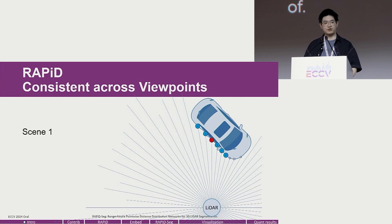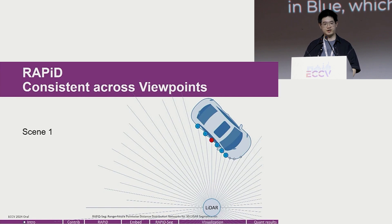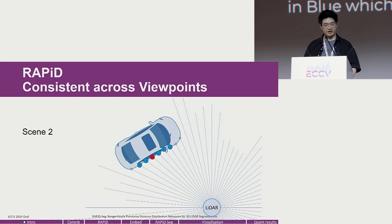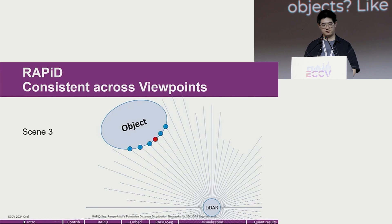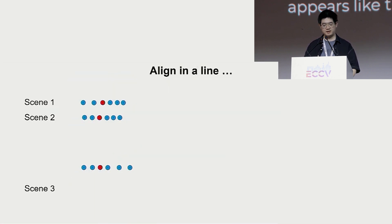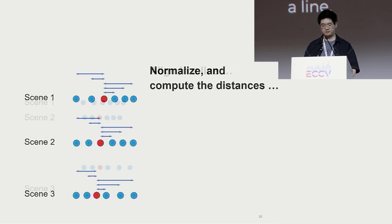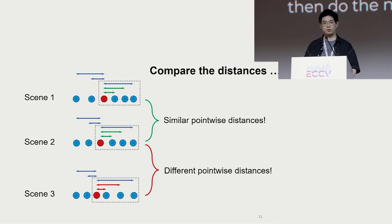Take this figure as an example of a bird-eye view of LiDAR scenes. The blue solid line represents LiDAR beams. We identify the five nearest neighbors in blue of the red anchor point. When the same vehicle moves to a new location in scene 2, we have the red anchor point with its blue neighborhood. In contrast, when a different object is at the same location, its points appear differently. We put them together, align them in a line, then do normalization and compute the distance. The point-wise distance distribution in scene 1 and scene 2 is similar, but it differs significantly from scene 3.